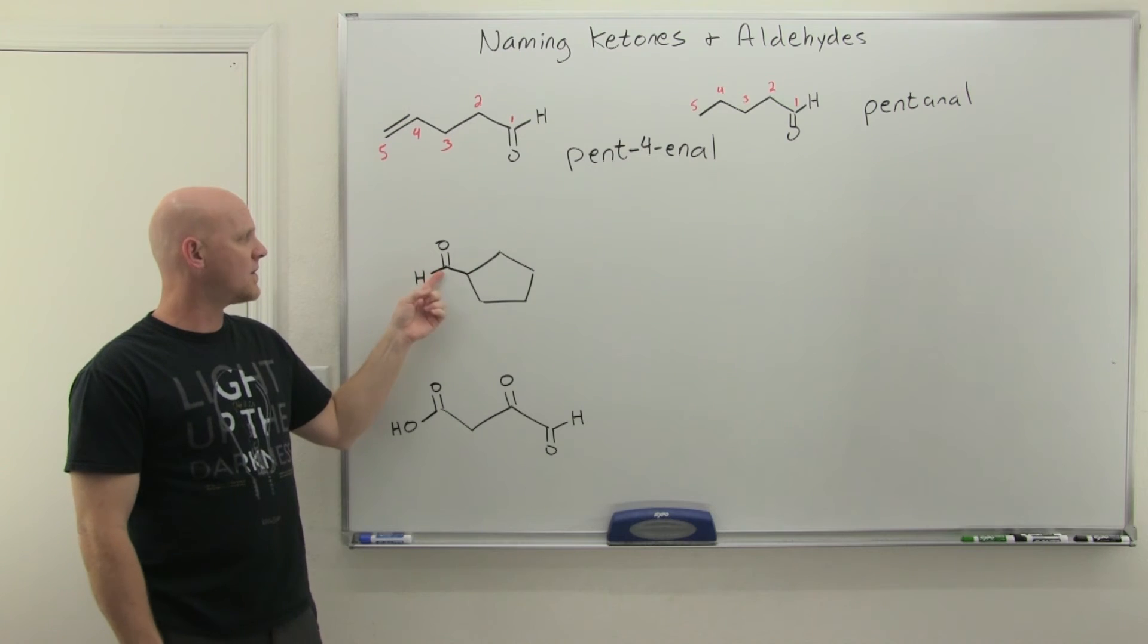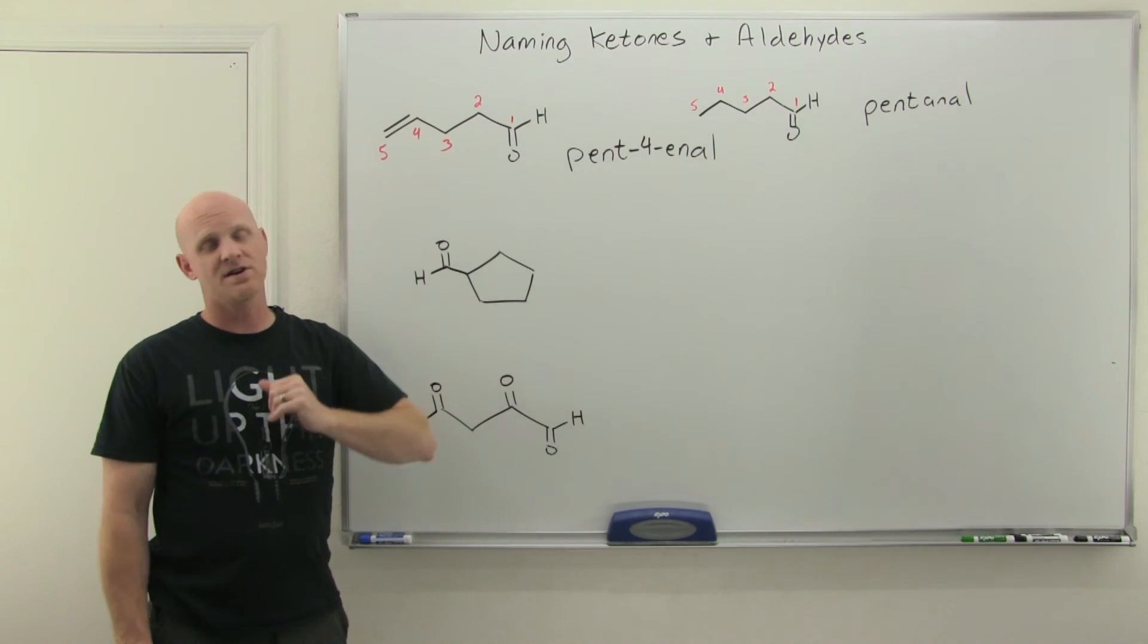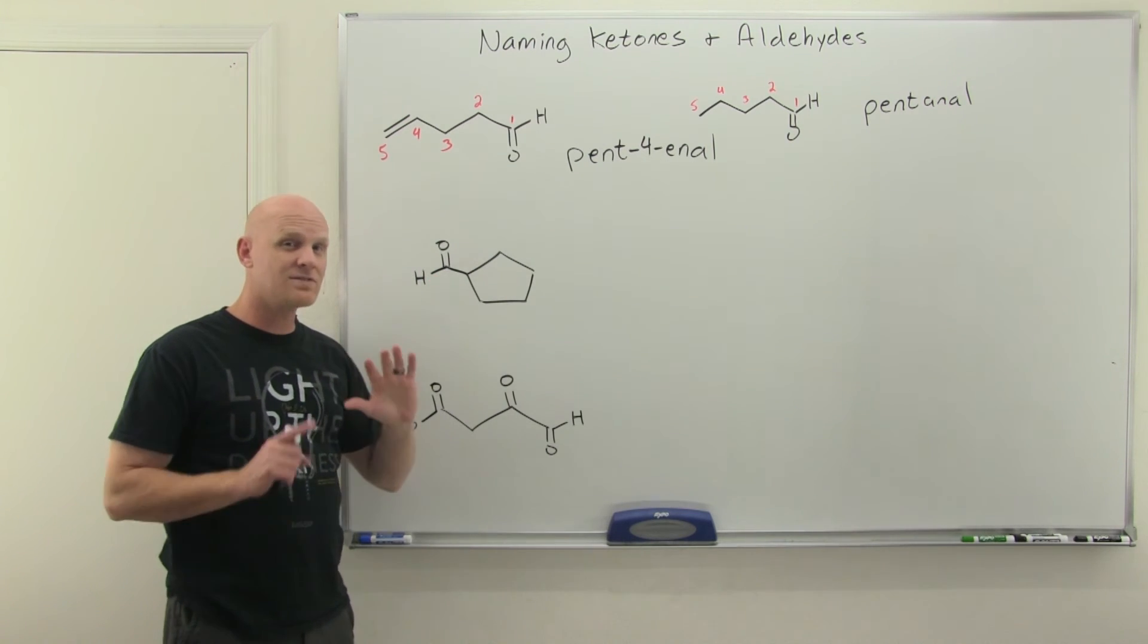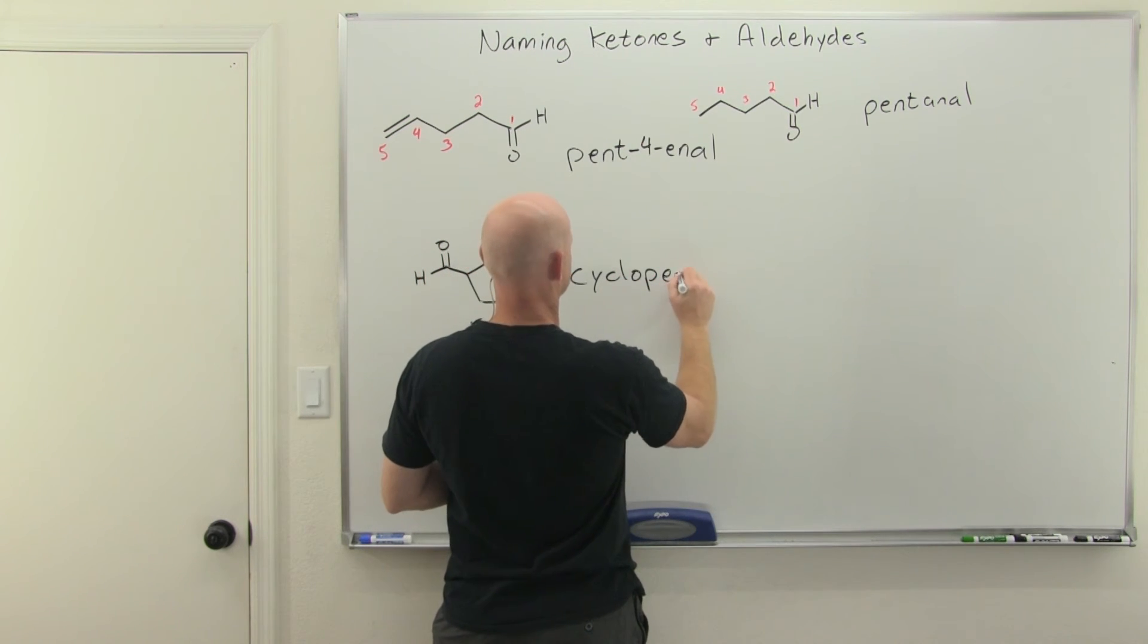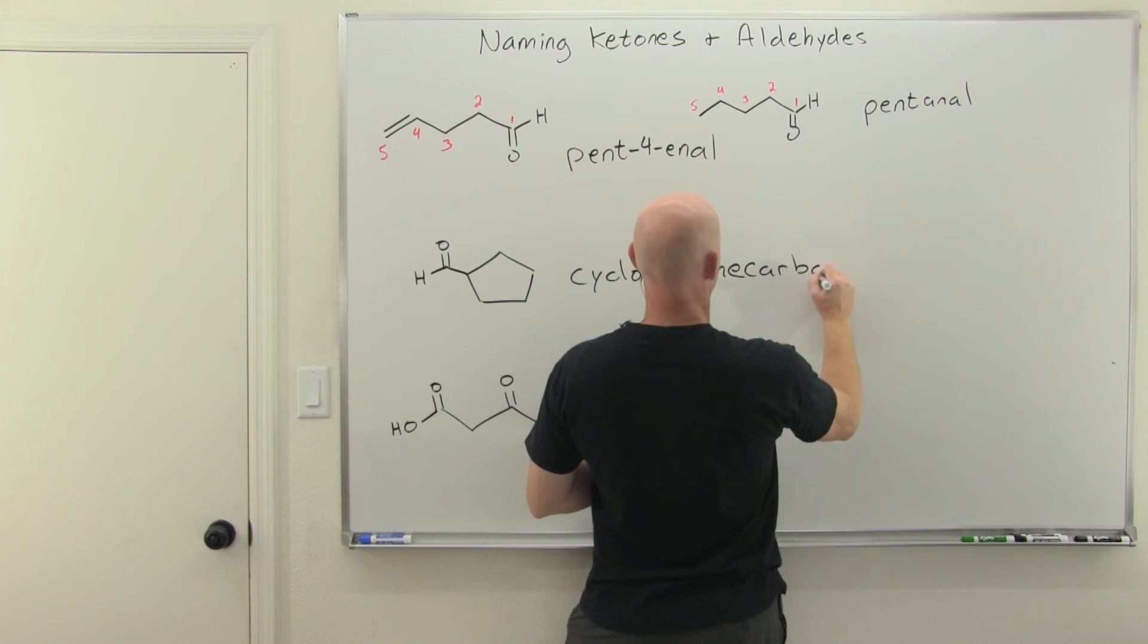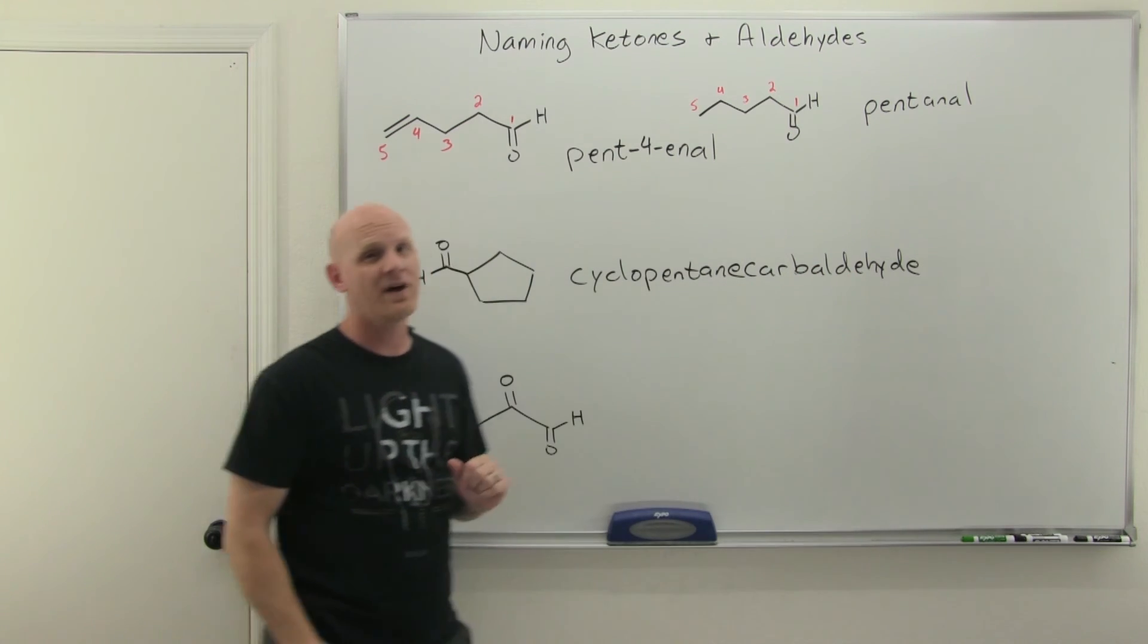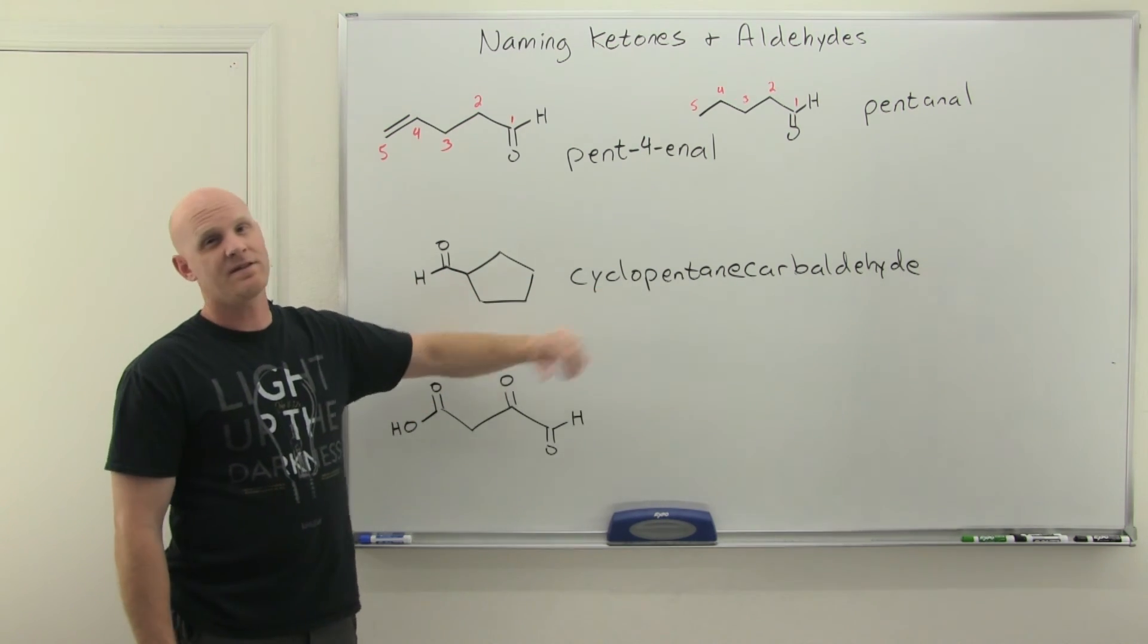Another special case you might see is when the aldehyde carbon is directly attached to a cycloalkane. In this case, you might be tempted to call this cyclopentanol, just like we saw cyclopentanone in the last example. But cyclopentanol, if you look at that name, would sound like it has five carbons. Well, this doesn't have five carbons. It has the five in the ring plus the carbonyl carbon. It's got six carbons. So in this case, you actually give the name of the ring first. So this is cyclopentane, and then you just say carb-aldehyde, all one big word. Cyclopentanecarb-aldehyde. You got cyclopentane, which shows five carbons and then carbaldehyde, one additional carbon, that's an aldehyde. For cyclic aldehydes, where the aldehyde is directly attached through one bond to a ring, you take this approach instead.